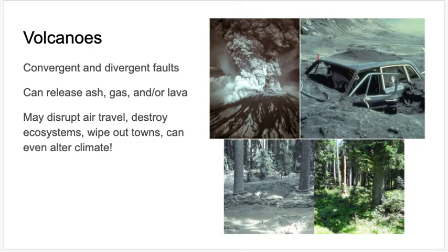Volcanoes are another one of the big physical hazards. We see these at convergent and divergent faults between tectonic plates — where plates are crashing into each other with one going underneath, or where plates are moving apart and molten material comes up from Earth's deep crust. Volcanoes can be different: some emit ash and gas that can travel very rapidly and literally suffocate people where they stand, like in Pompeii. Others spew lava, like in Hawaii, where it slowly moves down the mountain and creates new land, or it can be a combination.